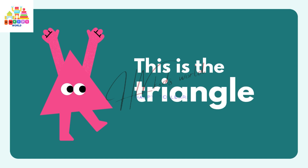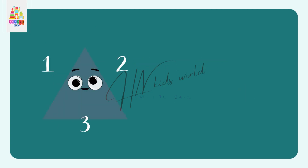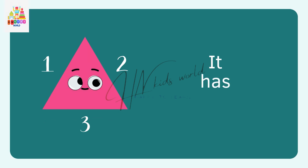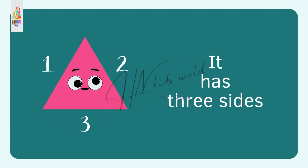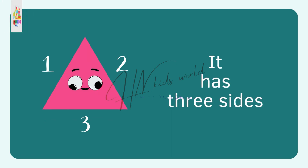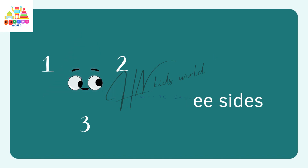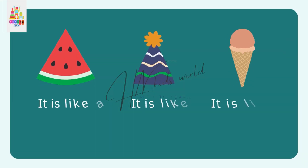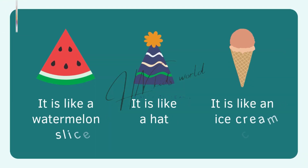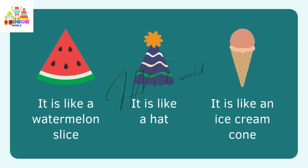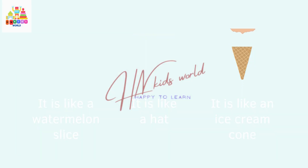This is the triangle. It has three sides. It is like a watermelon slice, like a hat, and like an ice cream cone.